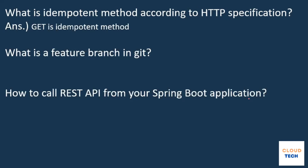The next question is: what is an idempotent method according to HTTP specification? An idempotent method is one which can be repeated safely without any side effects. For example, if you GET a resource multiple times, there is no side effect on the server — that is idempotent. However, POST is not idempotent because calling it multiple times creates multiple resources. An idempotent method can be called repeatedly without any side effect on server resources.